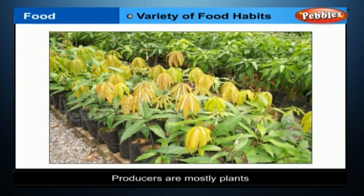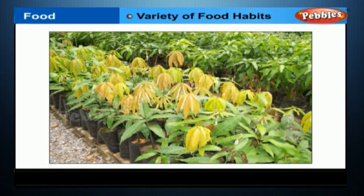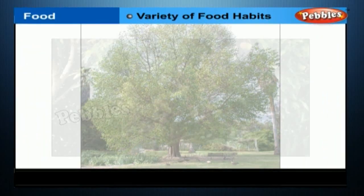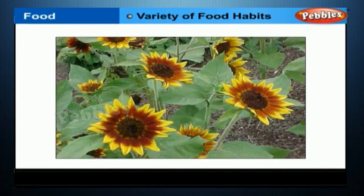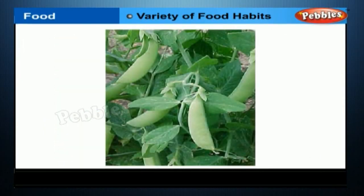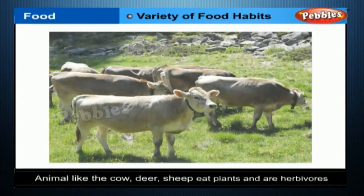Producers are mostly plants. They are so-called because they can prepare or provide their own food. All green plants which we see around us, like a peepal tree, mango tree, sunflower plant, and a pea plant are such plants. Animals like the cow, deer, sheep, and elephant eat plants and are therefore herbivores.